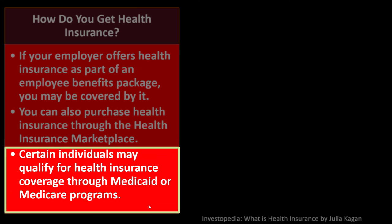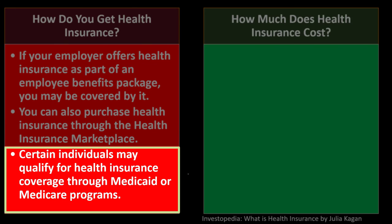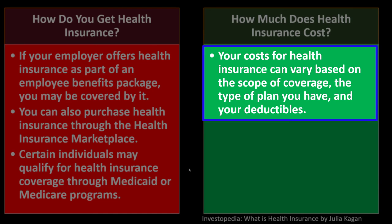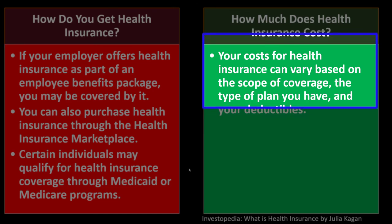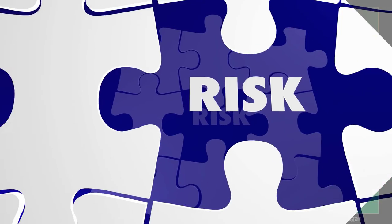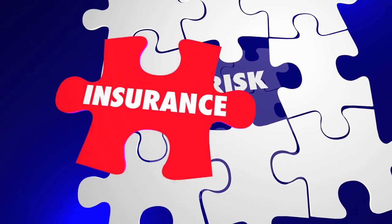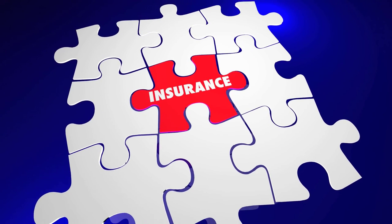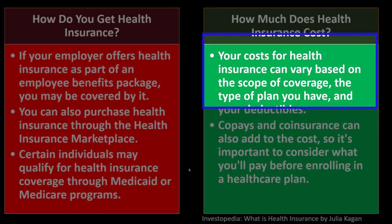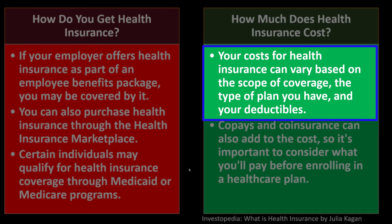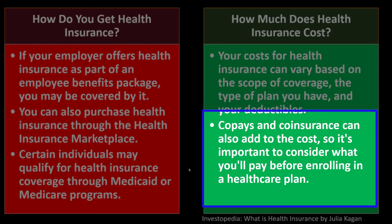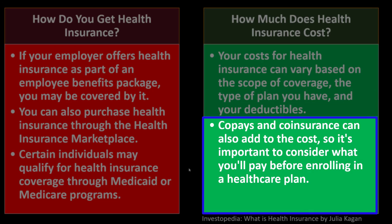Certain individuals may qualify for health insurance coverage through Medicaid or Medicare programs as well. How much does health insurance cost? Your costs may vary based on the scope of coverage, the type of plan, and your deductibles — it's more complex than other types of insurance because of additional components like co-pays and coinsurance. Premiums will vary in a way you'd expect based on deductibles, flexibility of coverage, and what's actually covered. Co-pays and coinsurance can also add to the cost, so it's important to consider what you'll pay before enrolling in a healthcare plan.